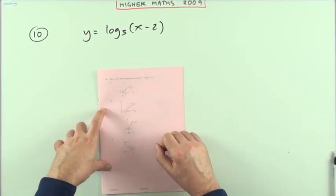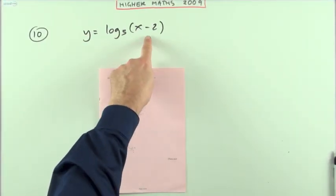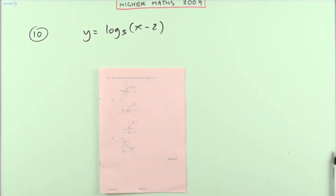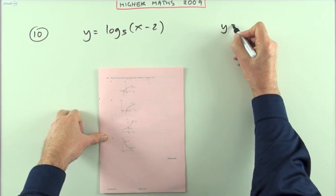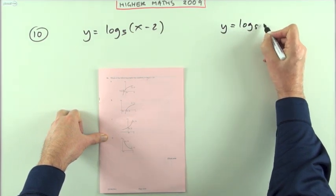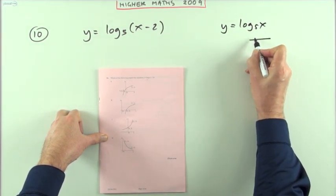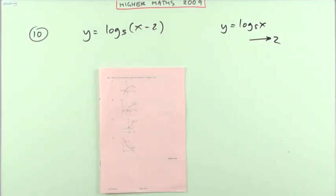Number 10 then. Which of the following graphs has got this equation? You notice that's just a shifted, translated equation. What's happened to this is, you've got the basic graph, y equals log base 5 of x, and it's been shifted forward 2.